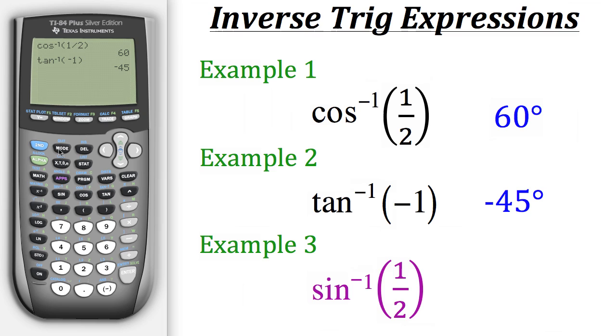So let's put that in our calculator. We'll hit second sine, giving us the inverse sine. Now we need to put in 1 half and then hit enter, giving us 30 degrees as our solution closest to the origin.